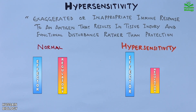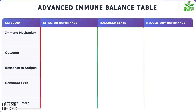When equilibrium is lost between these two mechanisms, and specifically when the effector mechanism overshoots the regulatory mechanism, hypersensitivity is mediated. In this info table of immune balance, we see how effector dominance causes hypersensitivity and how regulatory dominance leads to immunodeficiency. In the middle we have the balanced state where none of these complications occur.